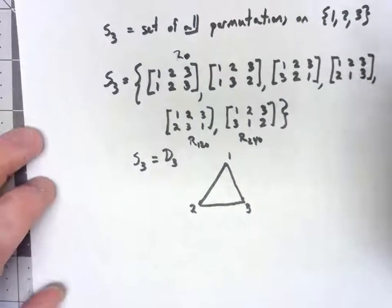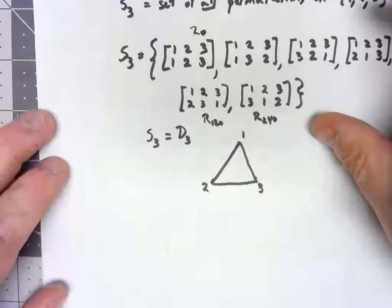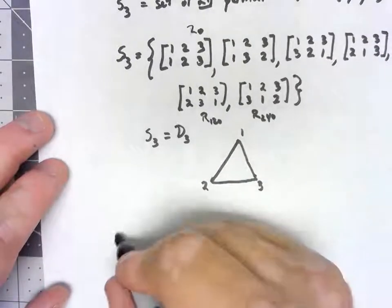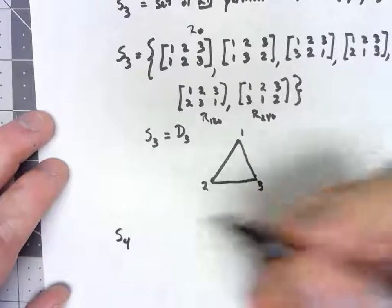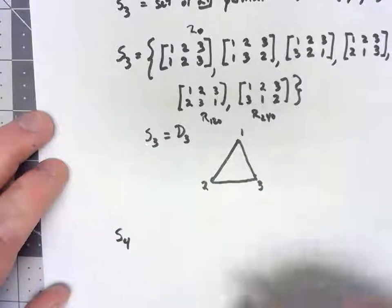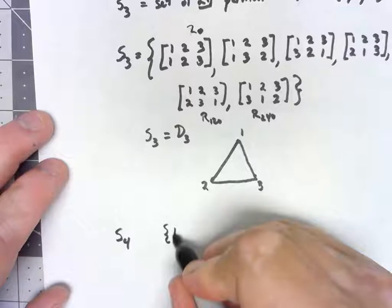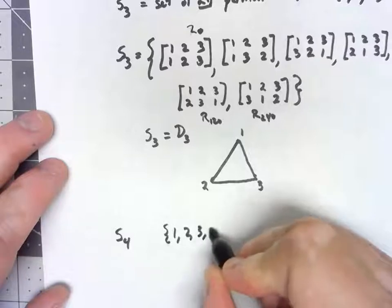However, that is not true if we go up one element higher. If I look at S4, so I've got the set of permutations on the set 1, 2, 3, 4,